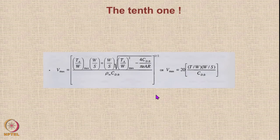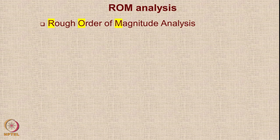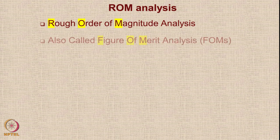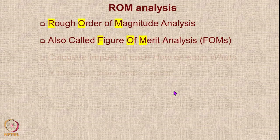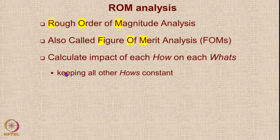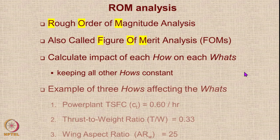What you then do is a rough order-of-magnitude (ROM) analysis — correlating how a small change in, say, CL affects various performance parameters. This is also called a figure-of-merit analysis. You keep all other hows constant, take each design parameter one at a time, and see its effect on each requirement. Let us look at three parameters: TSFC (baseline 0.6/hr), thrust-to-weight ratio (0.33), and wing aspect ratio (25).